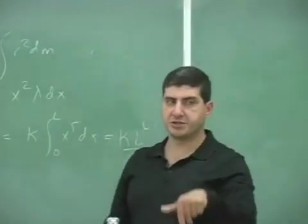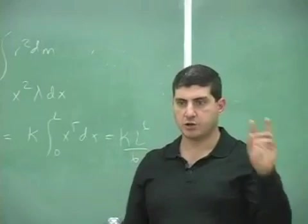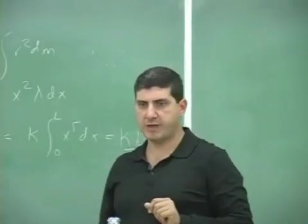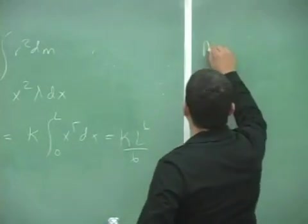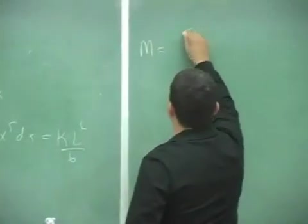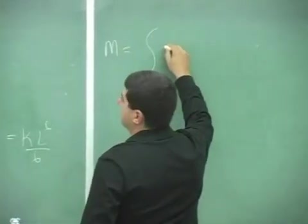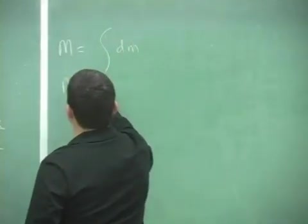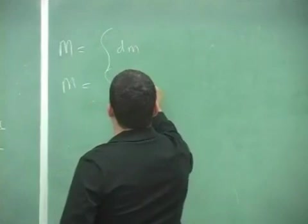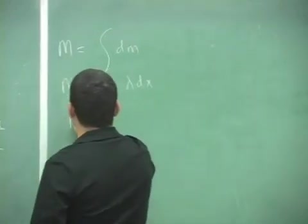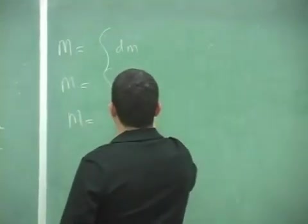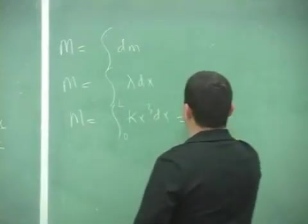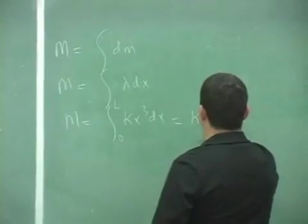Then you do another integral, just like for cylinders and spheres. You do two integrals, one for the I, one for the mass. And then you have here m. You integrate here integral dm. And dm is lambda dx. Lambda is kappa x cubed dx, zero to L. And then you're left with kappa L to the fourth over four.